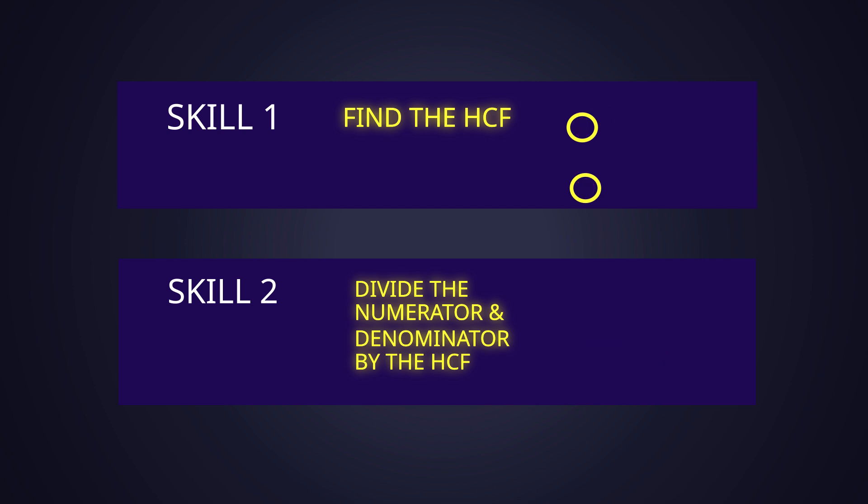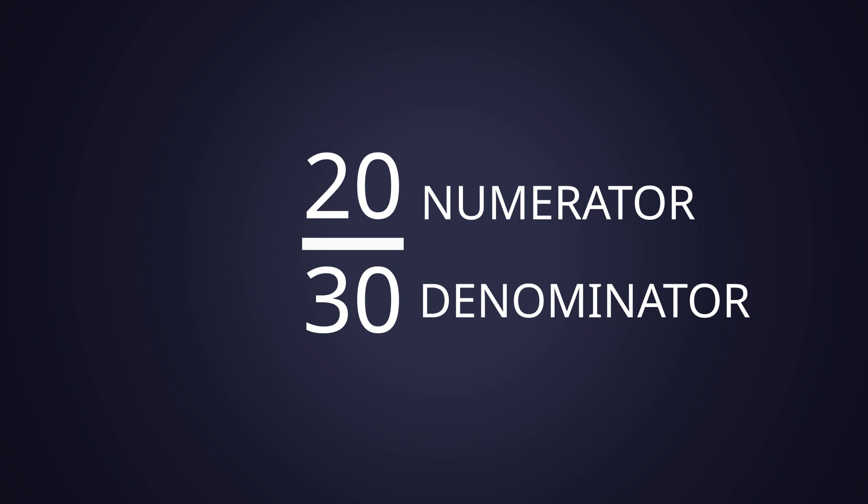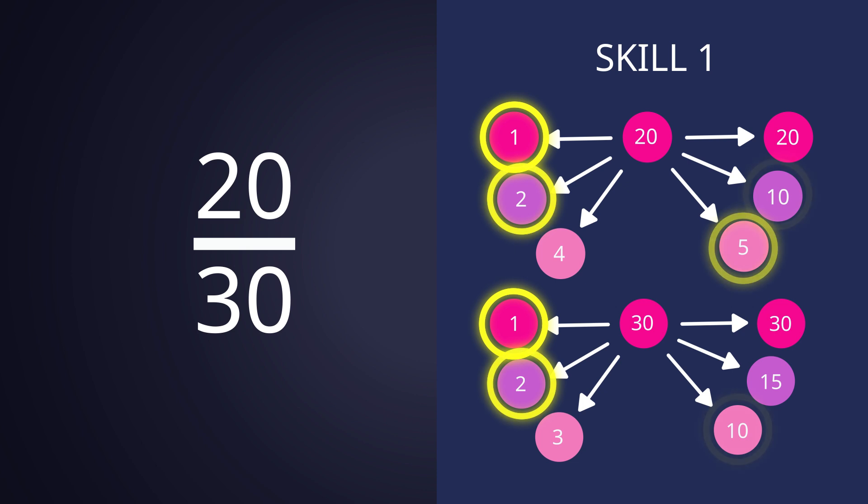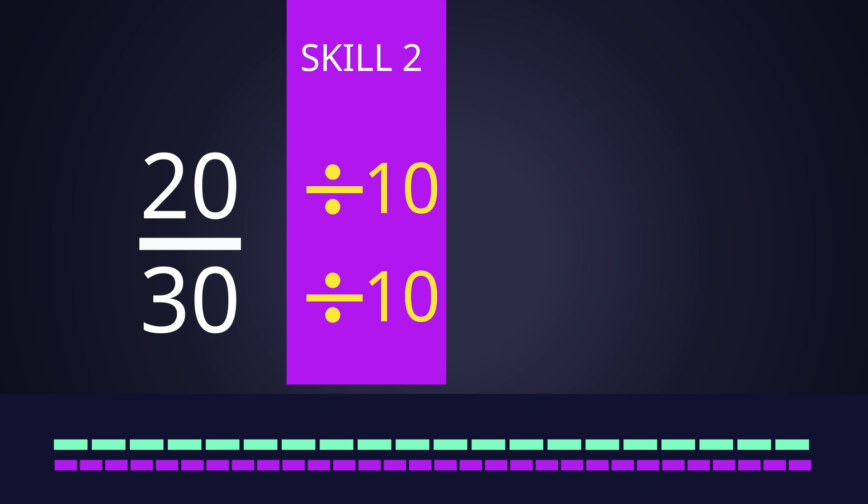However, if you get a bulky fraction like 20/30, you can see that they share the following common factors: 1, 2, 5, and 10. As 10 is the Highest Common Factor of both 20 and 30, dividing the top and bottom by 10 will give you 2/3, simplifying it completely.